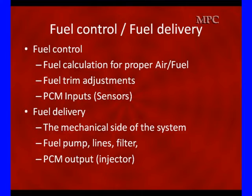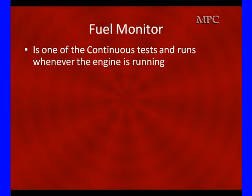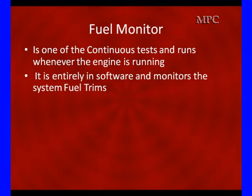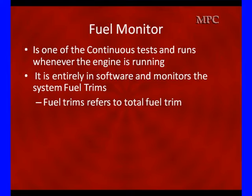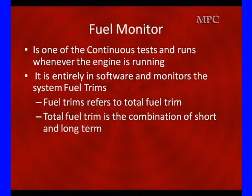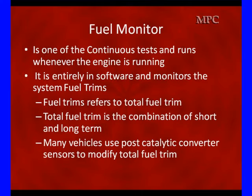We know you may be using ethanol, E85, or 10% ethanol, but we're looking at 14.7 as the basis for this course. The fuel monitor is one of the continuous tests that runs whenever the engine is running — it is entirely in software and monitors the fuel trims. Fuel trims refer to total fuel trim, which is a combination of short and long term. Many vehicles use post-catalytic converter sensors to modify total fuel trim. If the sensor after the catalyst sees a long-term shift rich or lean, it will come back and modify total fuel trim.